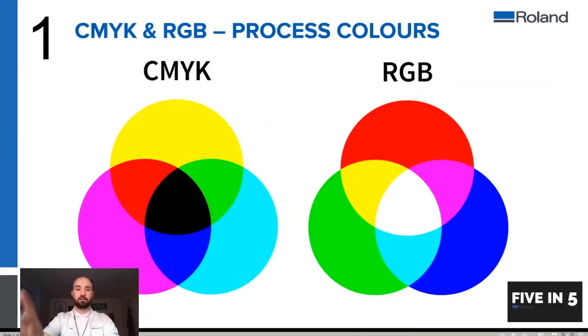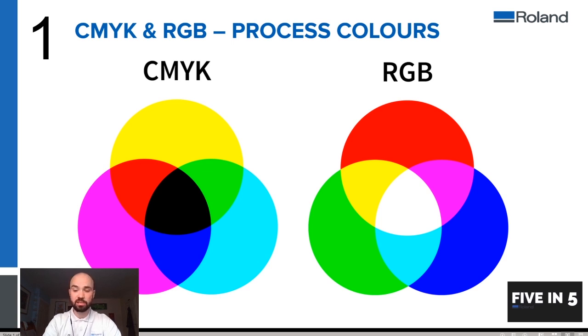Hello, Joe from the Roland Academy here, and we're going to be taking apart RGB and CMYK process colors in five easy steps. When we're talking about CMYK and RGB, we're talking about these as process colors, meaning that there are three well-chosen colors in each of these color modes which combine to create a whole range of other colors. The process refers to the amount of these colors that we combine in order to create the other colors.